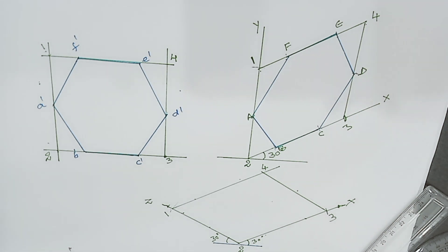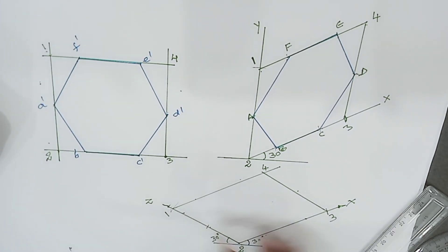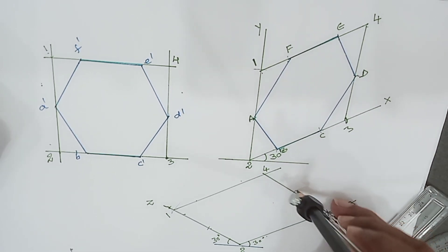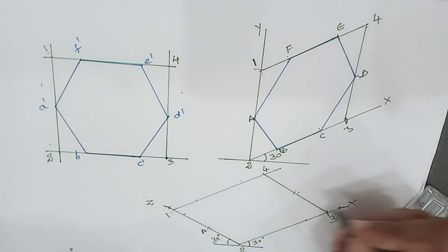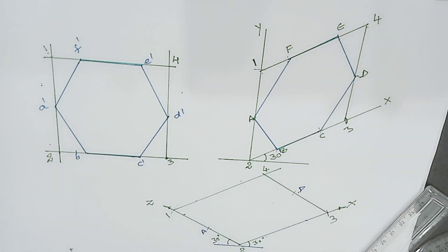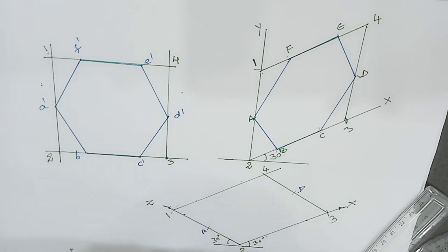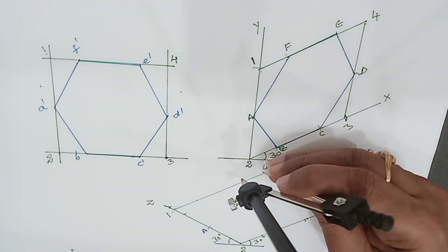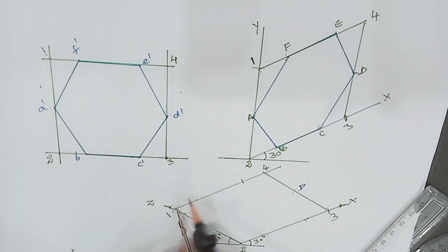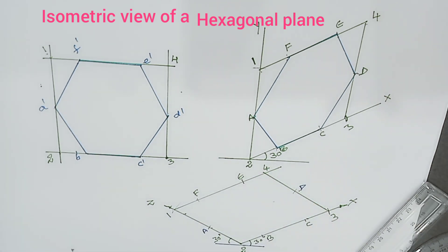Then with compass, using 2A as radius and 2 as center, and the same radius with 3 as center, mark points A and D. Next, using 2B as radius and 2 as center; then 3 as center, 4 as center, and 1 as center — all with the same radius — mark points B, C, E, and F. Then join all the points in sequential order.